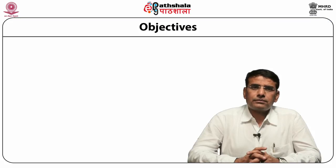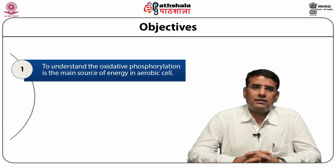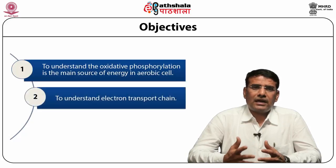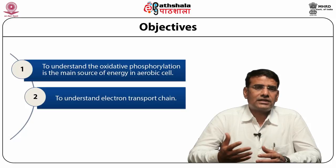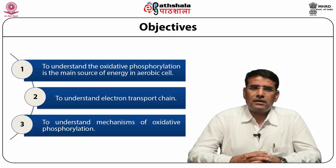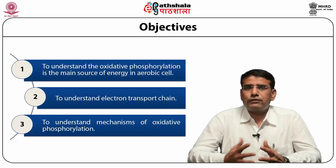So students, let us see what we are going to learn in this module. We will try to understand oxidative phosphorylation as the main source of energy in aerobic cells, the electron transport chain and its components, and we will also try to understand the mechanism of oxidative phosphorylation.